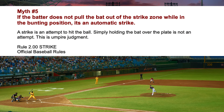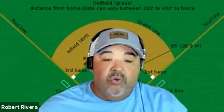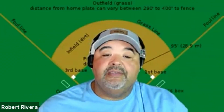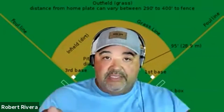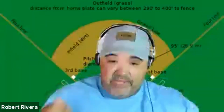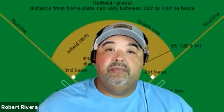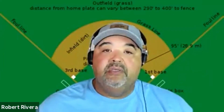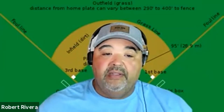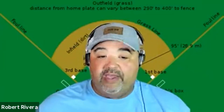Myth Number Five: if the batter does not pull the bat out of the strike zone while in the bunting position, it's an automatic strike. That's a myth — absolutely not. A strike is an attempt to hit the ball. He can stay in the bunting position, and if the pitch is ten feet over his head, that's not a strike just because he has the bat in front. Simply holding the bat over the plate is not an attempt — it's an umpire's judgment call. That would be Rule 2.0, the definition of a strike.